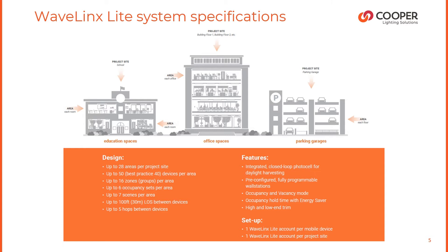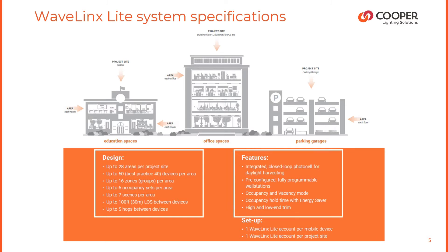In terms of features, there is an integrated closed loop photocell for daylight harvesting, and also occupancy detection through passive infrared. Our premise is based on speed of installation — a contractor can install a luminaire with occupancy and daylighting capability at the same time they install the basic lighting. Pre-configured fully programmable wall stations offer out-of-the-box functionality as soon as they join that area, and are fully programmable with the Wavelinks Light app. Occupancy and vacancy modes are available, and high-end and low-end trim are also available in response to energy code requirements.